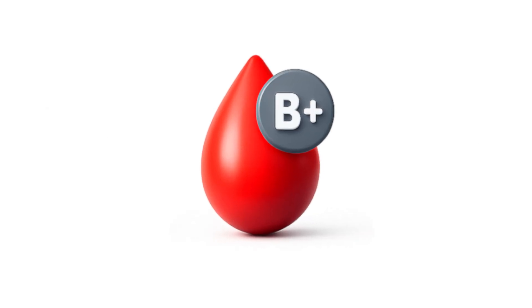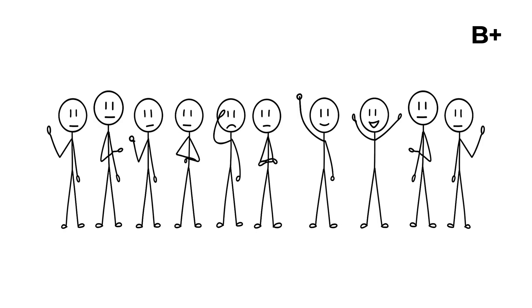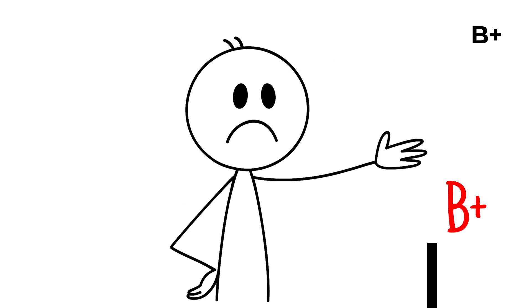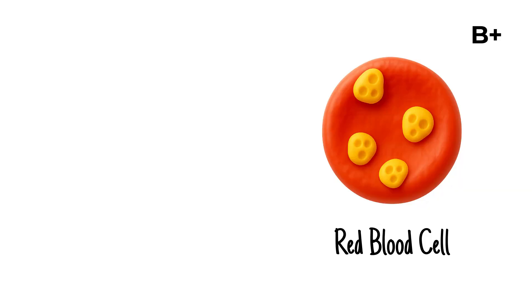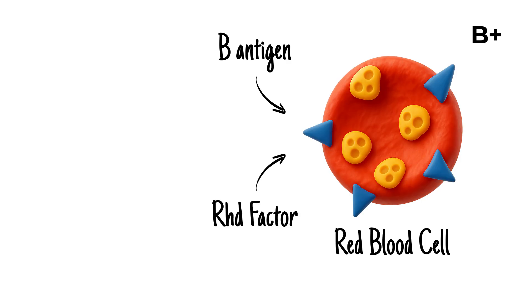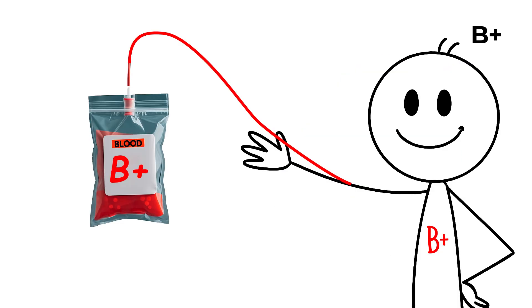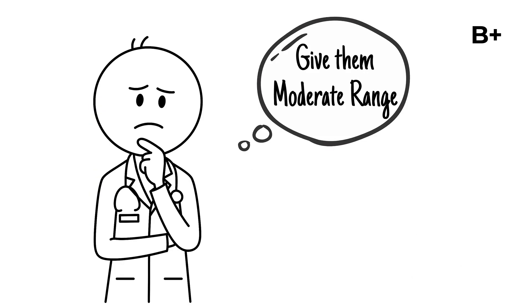B positive blood is found in about 1 in 10 people, making it less common than type O or A, yet still significant worldwide. It is defined by the presence of B antigens on red blood cells, along with the Rh D factor. In transfusions, B positive individuals can safely receive blood from B positive, B negative, O positive or O negative donors, giving them a moderate range of compatibility.